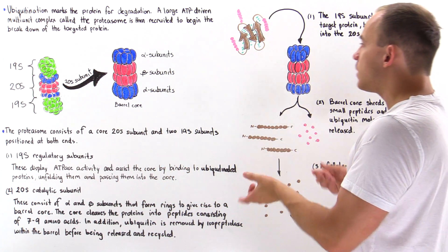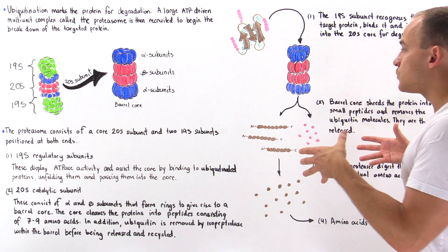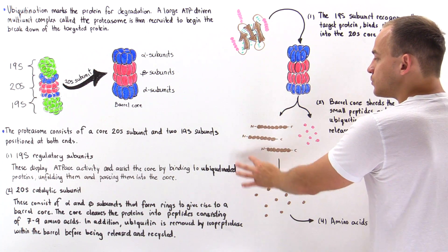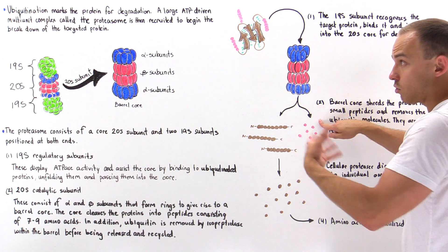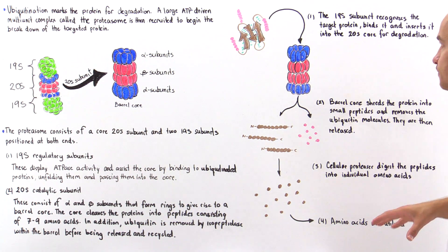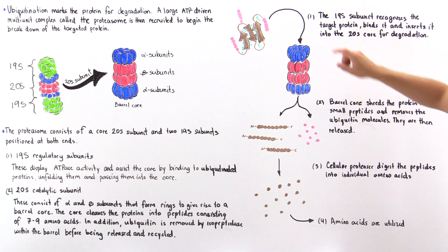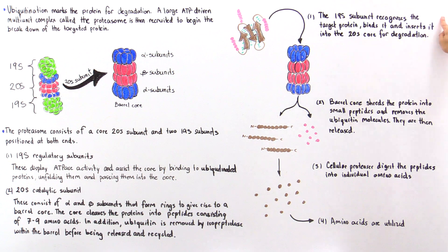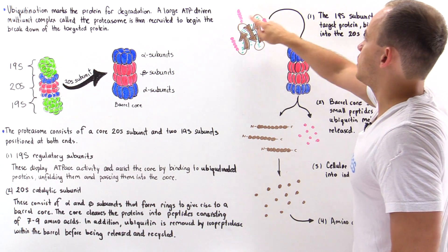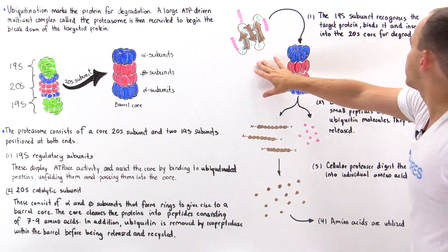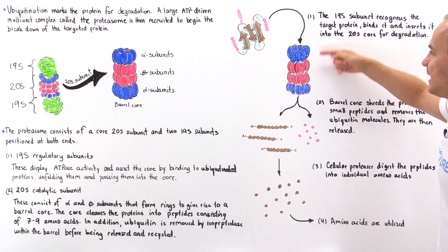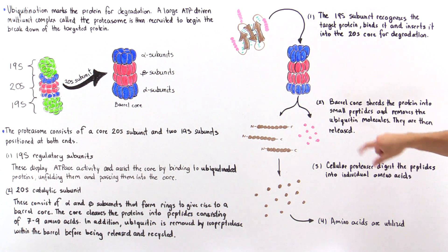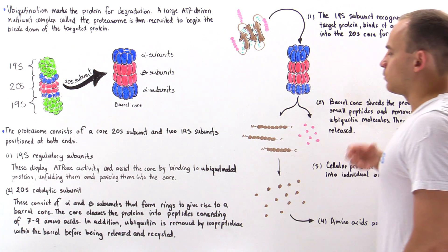This process continues until we form peptides that are about 7 to 9 amino acids in length. At that point, we begin to remove those ubiquitin molecules, and those peptides are released along with the ubiquitin molecules. These ubiquitin molecules, which are also proteins, are not actually broken down. In step 1, the 19S subunit recognizes the target protein because of the polyubiquitination and binds to it, inserting it into the 20S core for degradation. The ubiquitin is then removed, recycled, and reused by the cell.